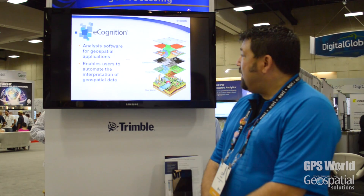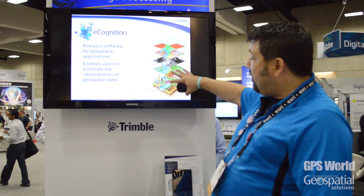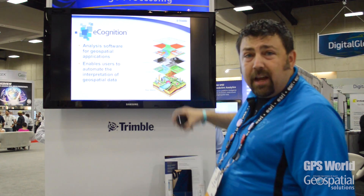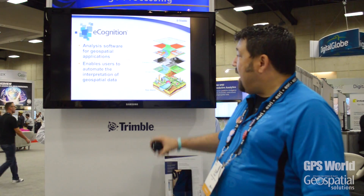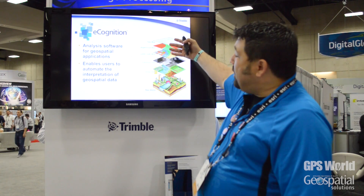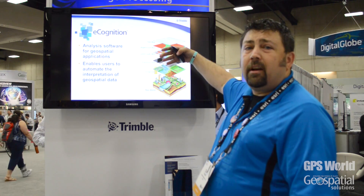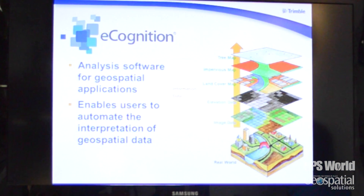I'm going to explain what eCognition is a little bit. eCognition is a standalone image analysis software package that allows you to take information or data in the initial stages from the real world. We have a lot of data collection type of activities, whether it's airborne, truck-mounted systems, or terrestrial systems. We're really good at collecting data and then moving that data into information, which is what the GIS community is asking for — taking these data products and moving them into information, which has been historically a very manual process.